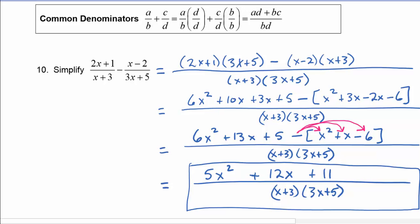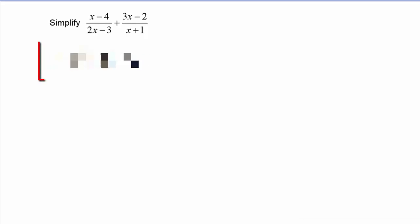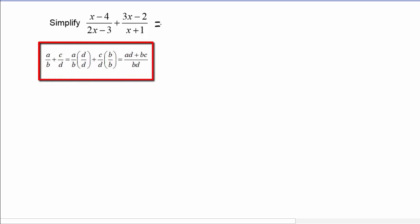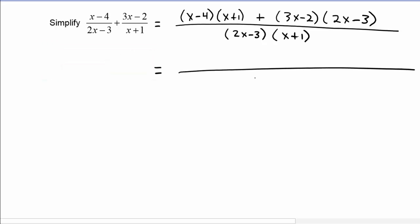Let's check out this next example. Same process here. We know that our common denominator will be 2x minus 3 times x plus 1, and the numerator will be x minus 4 times x plus 1 plus 3x minus 2 times 2x minus 3.